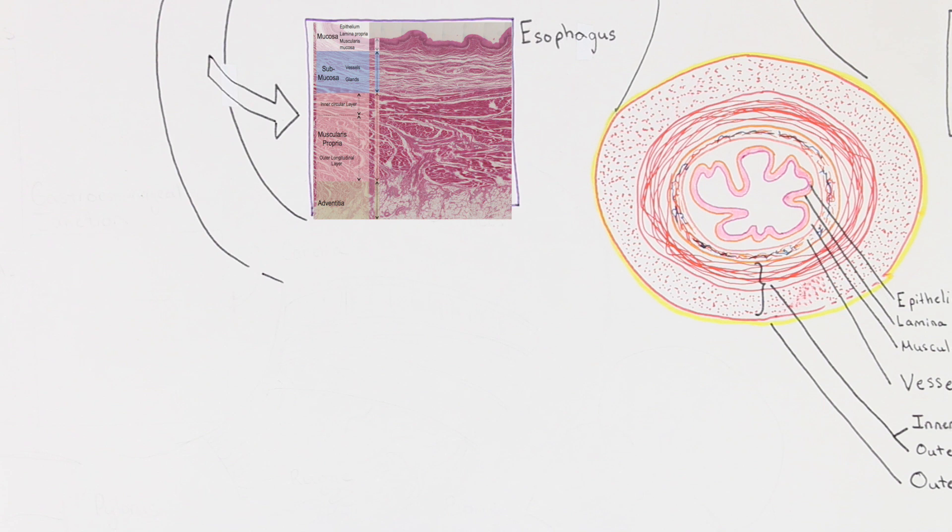Beneath these layers is the muscularis propria. Notice how there are two layers of muscle. The more internal layer has circularly oriented muscles following the contours of the lumen, and the external layer is longitudinally oriented and is coming out at you in this section.